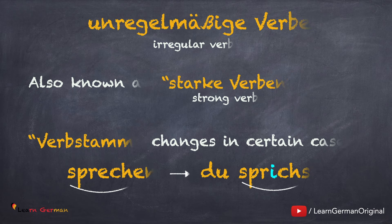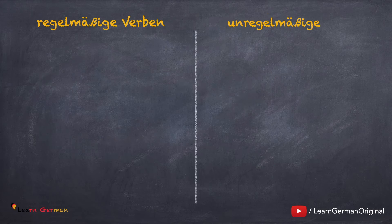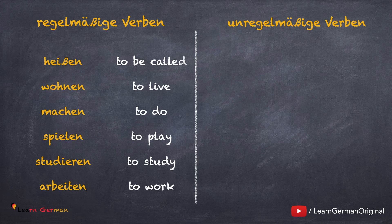In the next two lessons we will be conjugating a few regular verbs and a few irregular verbs in detail. First, let's quickly go through some verbs you should know. Regelmäßige Verben — regular verbs: heißen, wohnen, machen, spielen, studieren, arbeiten.